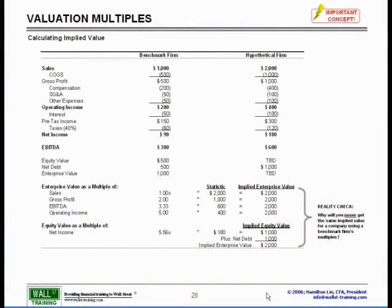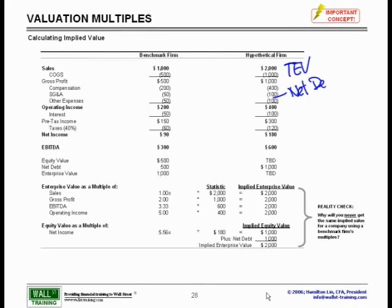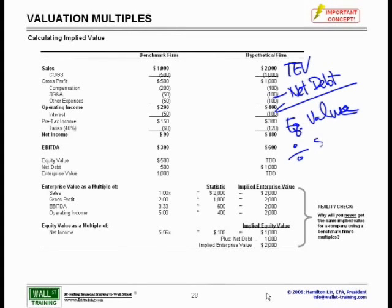You want to make sure that you understand how to go up and down what we call the capital structure. You calculate a total enterprise value initially. You then minus net debt and other forms of capital — that gets you to your implied equity value, which you then divide by your shares outstanding to get your price per share.